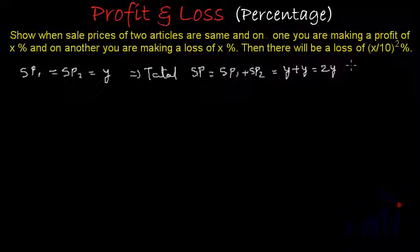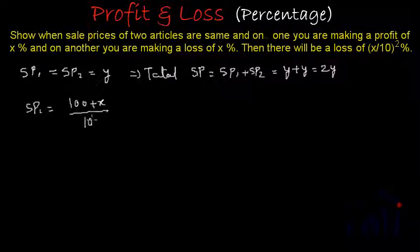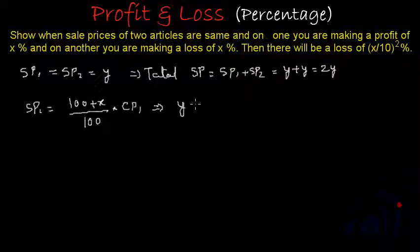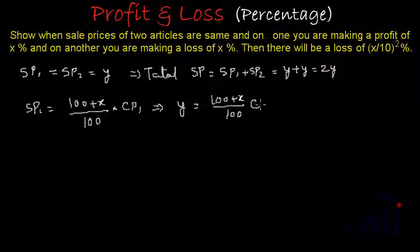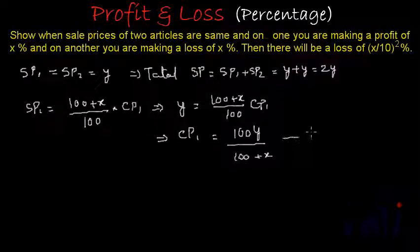For the first article, a profit of x percent is made. If we assume the cost price of the first article as CP1, then the sale price equals (100 + x)/100 multiplied by CP1. So y = (100 + x)/100 × CP1, which gives us CP1 = 100y/(100 + x). Let's call this equation number 1.